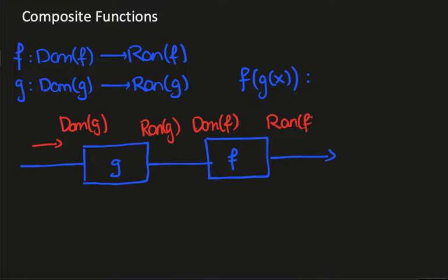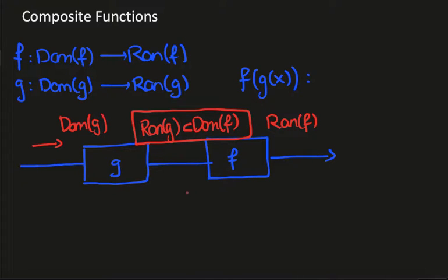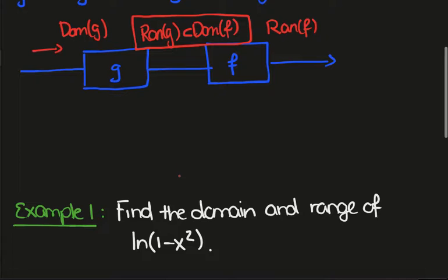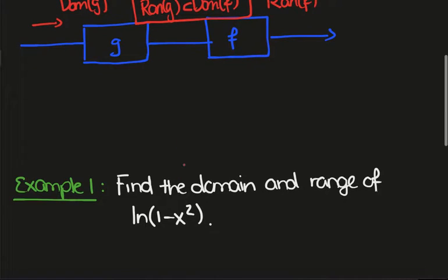As a result we'll have the range of f, unless we have to make a certain restriction. The part we're mainly concerned about when looking at the domain and range of a composite function is this: we need the range of g to be contained in the domain of f.